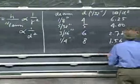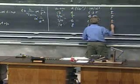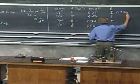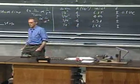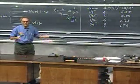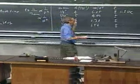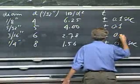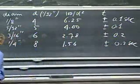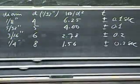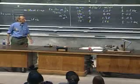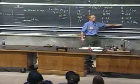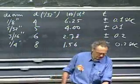You may ask why I don't give the error in diameter. The reason is that these ball bearings are so precisely made that the uncertainty is completely negligible compared to my timing error. So I won't even take that into account.